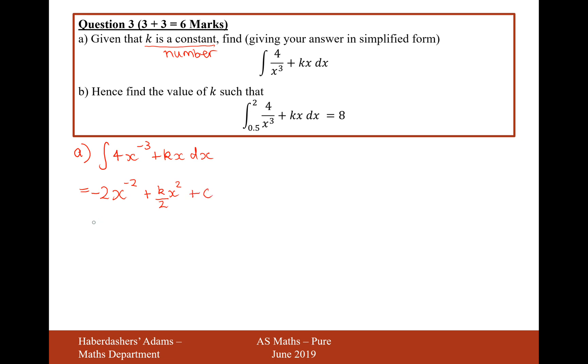And it says write your answer in simplified form, so I should probably rewrite this indice in simplified form. So it'd be minus 2 over x² plus k over 2 x² plus c. So there we are. That's the answer for part a.